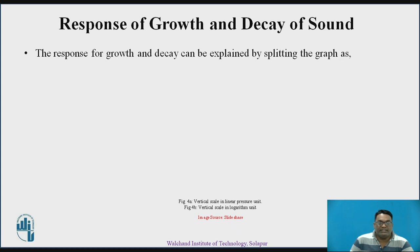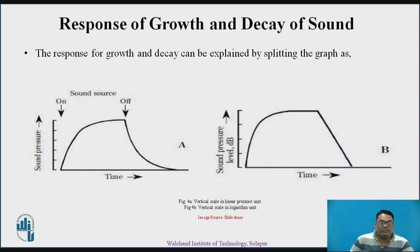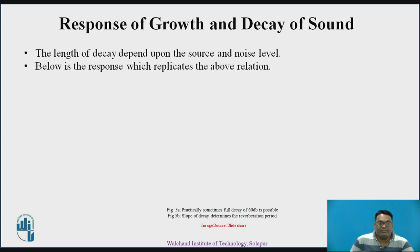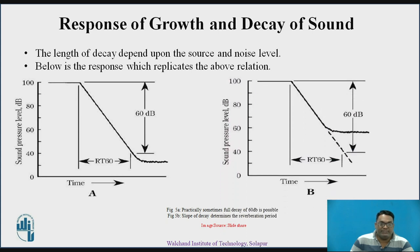The response for growth and decay of sound can be explained by splitting the graph. The on time marks the start of growth and the off time marks the decay. The length of decay basically depends upon the source and the noise level. The decaying of sound depends upon the source as well as noise which gets interfered in the channel.